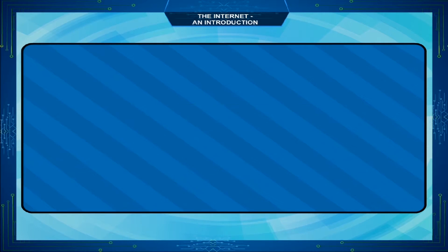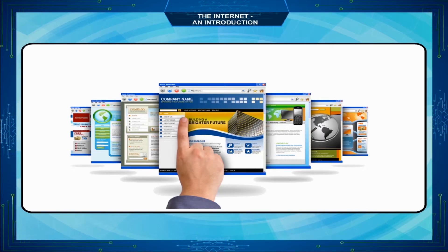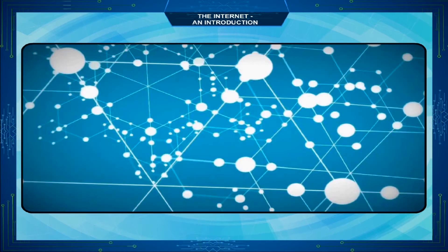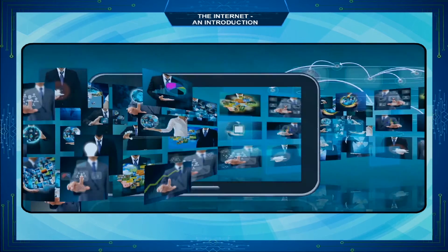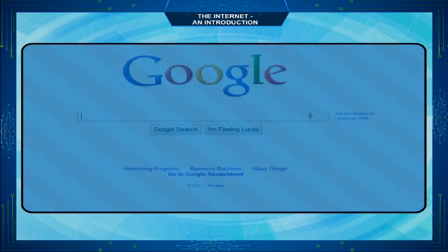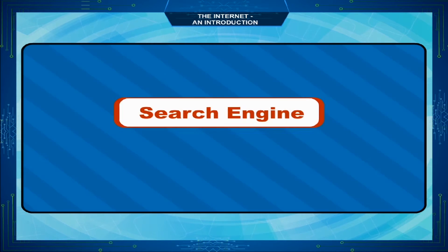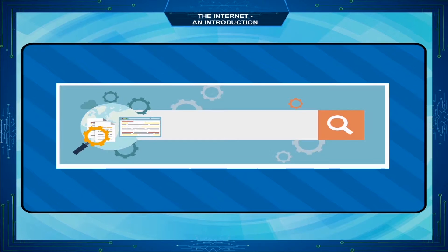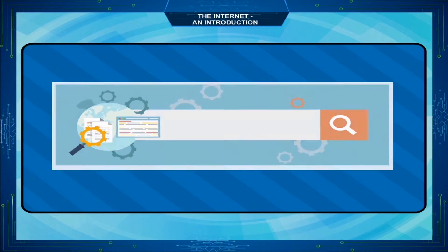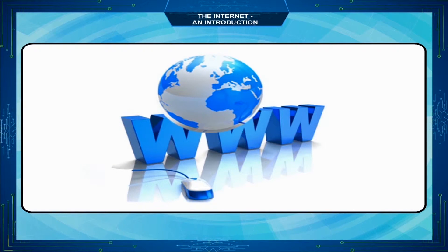Web Page: Any page on the Internet which contains information in the form of text, graphics, video, etc. Home Page: The first page of any website. Search Engine: It is a software system that is designed to search for information on the World Wide Web.